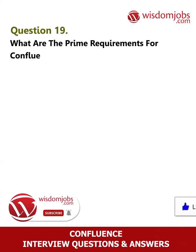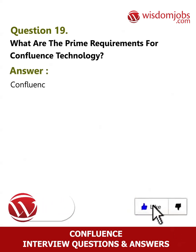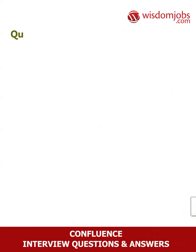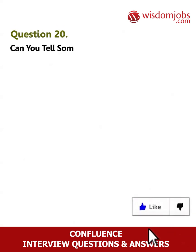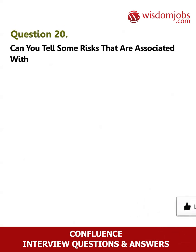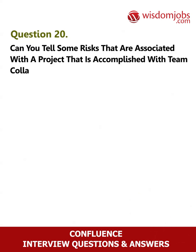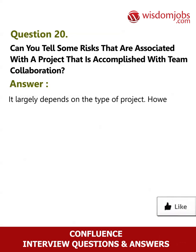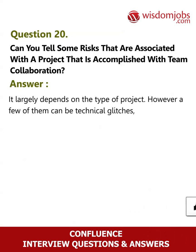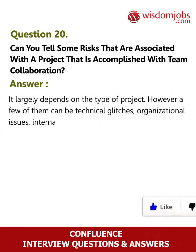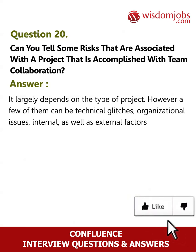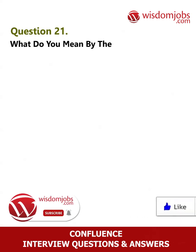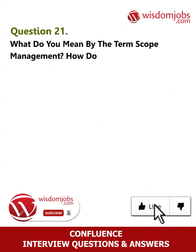Question 19: What are the prime requirements for Confluence technology? Answer: Confluence is a platform-independent approach and can simply run anywhere. Question 20: Can you tell some risks that are associated with a project accomplished with team collaboration? Answer: It largely depends on the type of project; however, a few of them can be technical glitches, organizational issues, and internal as well as external factors influencing a project.